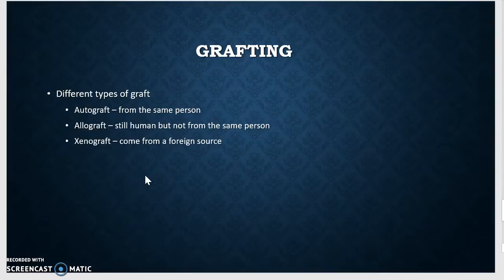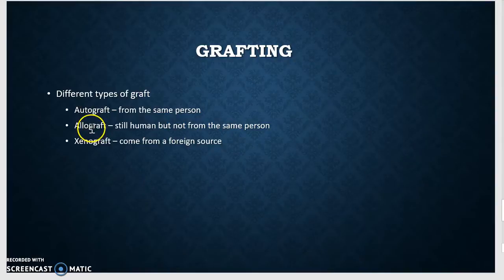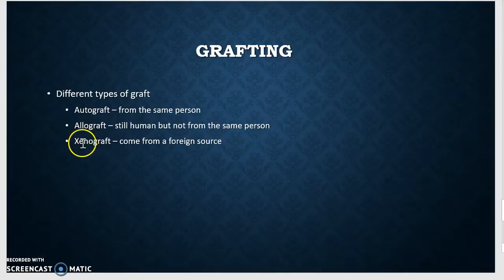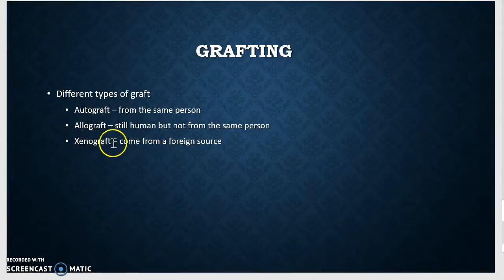Regarding the skin, we talk about grafting and there are different kinds of grafts. There's autograft — auto meaning from the person themselves. Allo — still human but not the same person. And xeno means foreign. Make sure you notice this word xeno comes up multiple times in the class — it indicates a foreign substance.